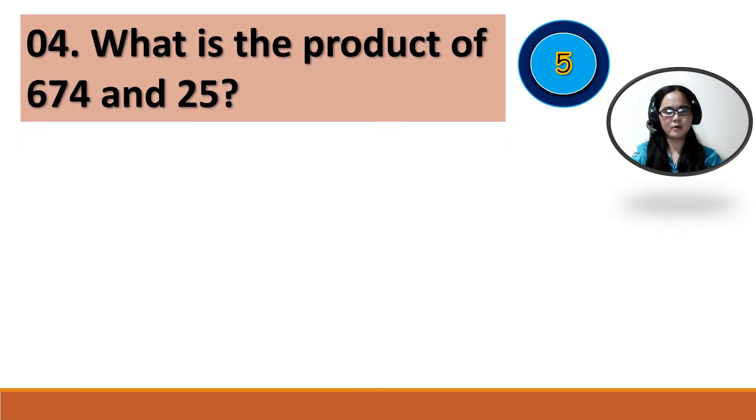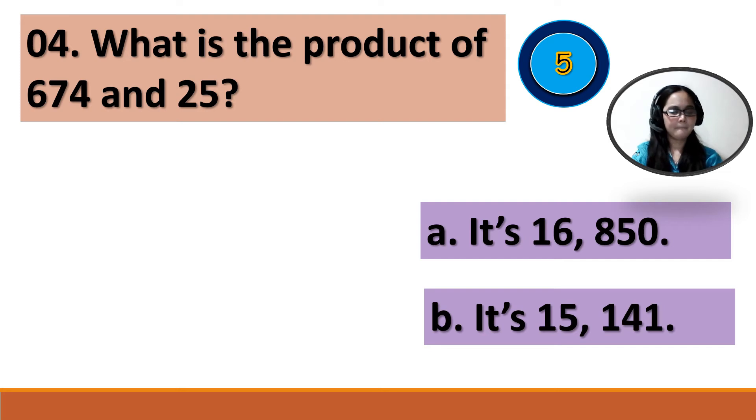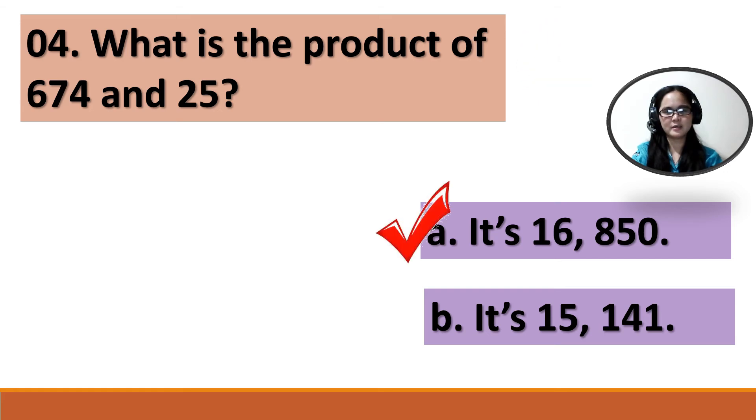Number 4: What is the product of 674 and 25? A. It's 16,850. B. It's 15,141. Your time starts now. The correct answer is letter A. It's 16,850.